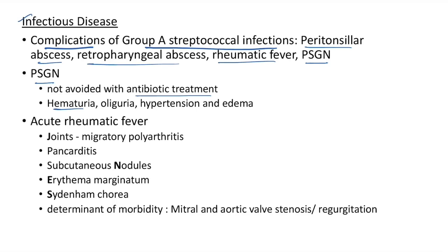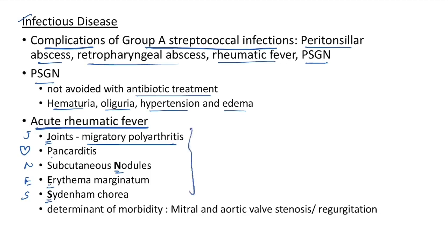Acute rheumatic fever clinical manifestations remembered by mnemonic JONES: J = joints (migratory polyarthritis), O resembles heart (pancarditis), N = subcutaneous nodules, E = erythema marginatum, S = Sydenham's chorea. These are the major Jones criteria. The determinant of morbidity in acute rheumatic fever is mitral and aortic valve stenosis or regurgitation.